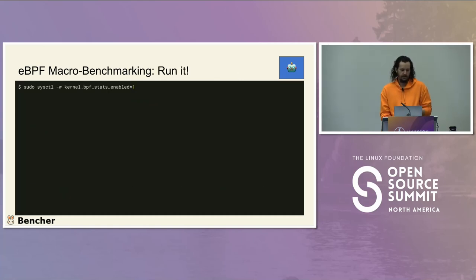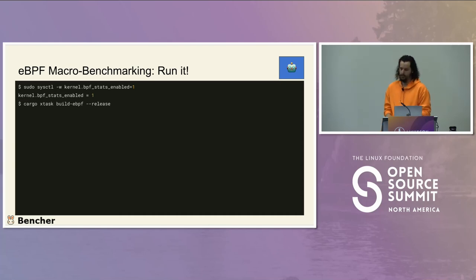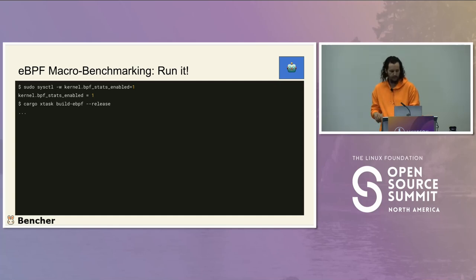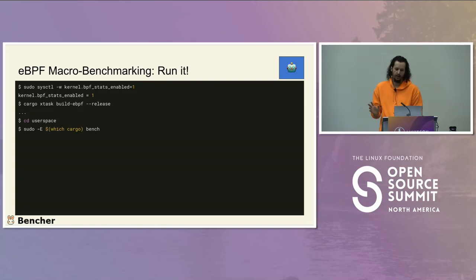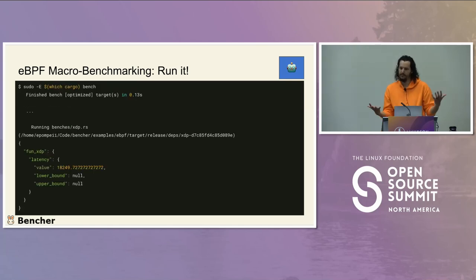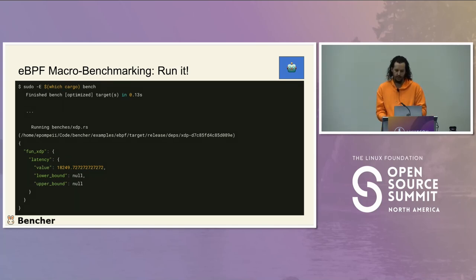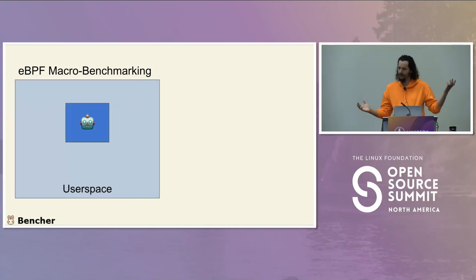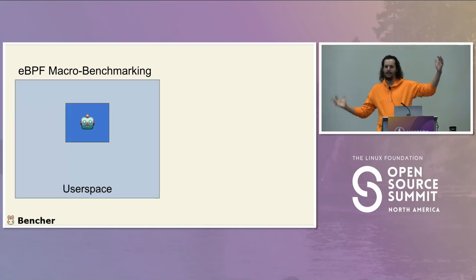We enable BPF stats, compile our BPF code in release mode, then run our user space app with sudo — because loading the eBPF program requires elevated privileges. We run cargo bench and the output is the JSON we serialized. We've now benchmarked our user space code at an integration level.